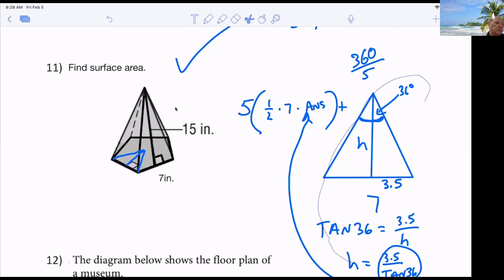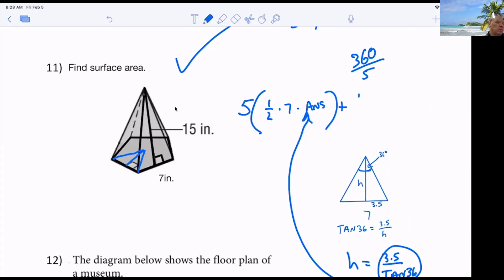So that answer goes in there. So 5 times 1 half times 7 times the answer plus... And then what? 1 half of what? 1 half perimeter times the slant height. So we have 1 half. The perimeter was what? 35. And of course, the slant height is what? 15. So just type that into the calculator, and we'll round to three decimal places, which was what? 346.803, you said? And then we would say inches squared.